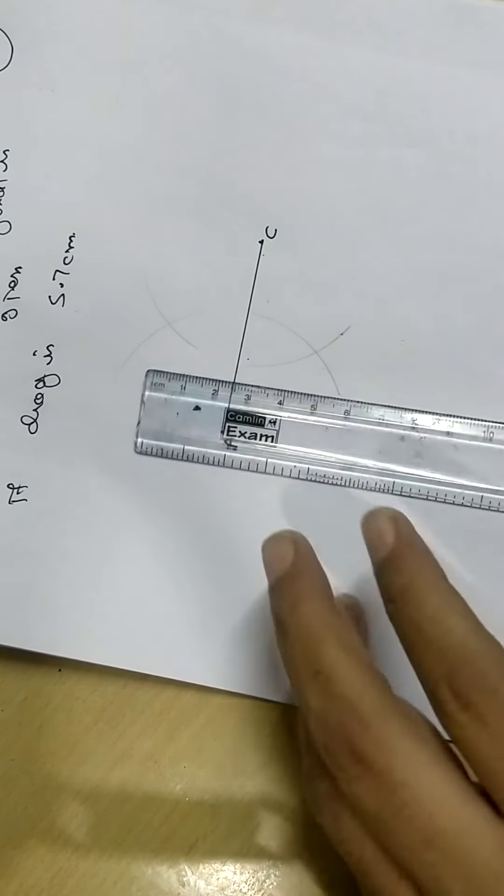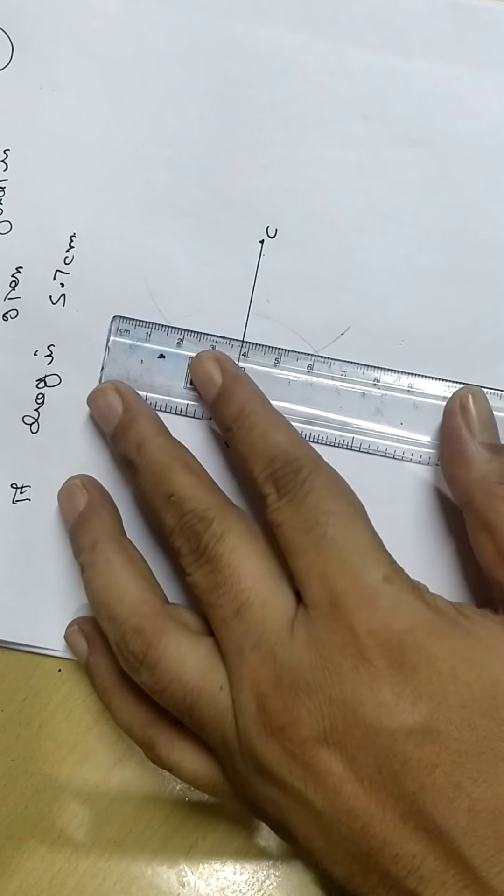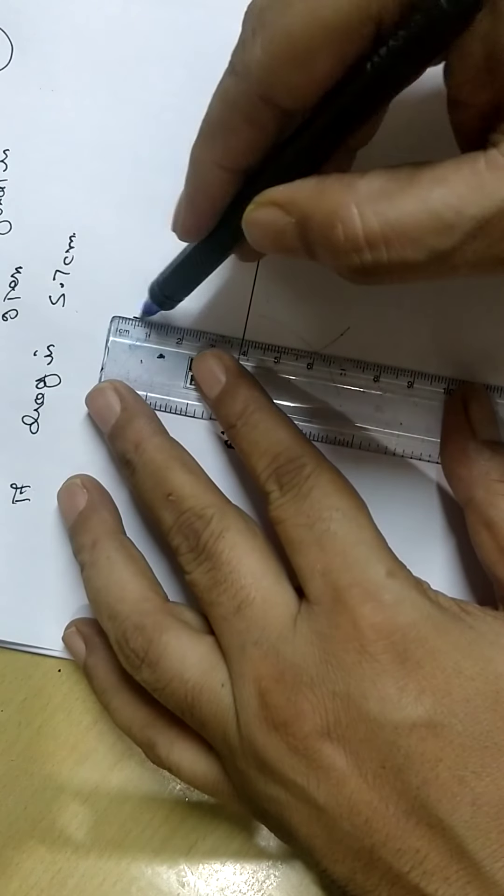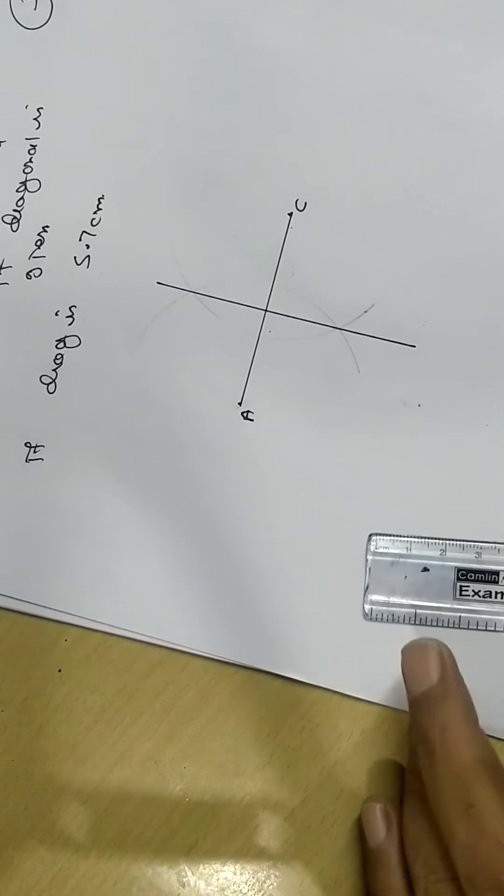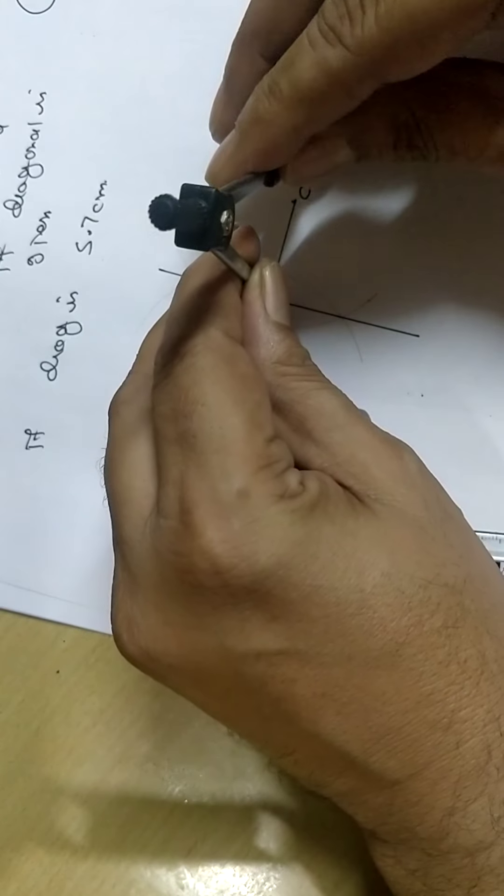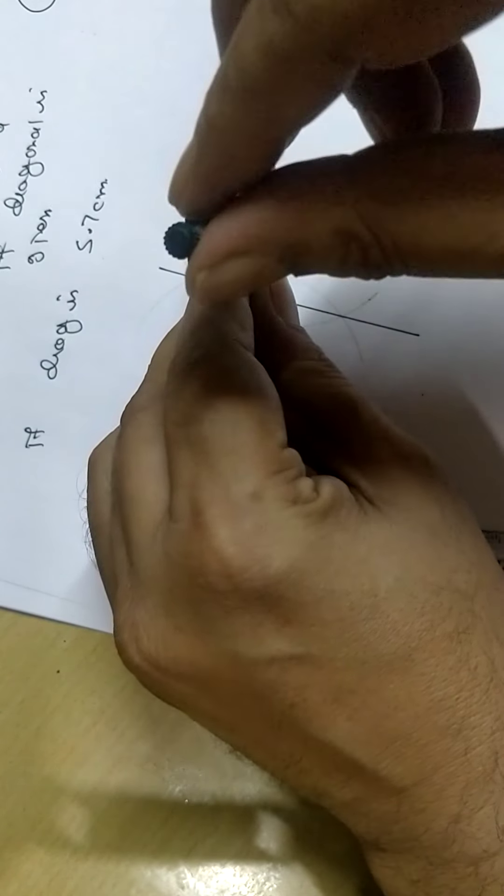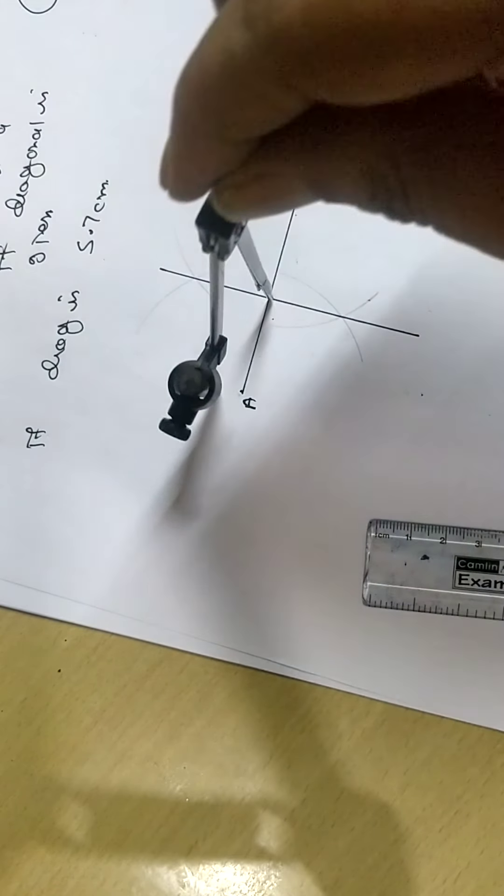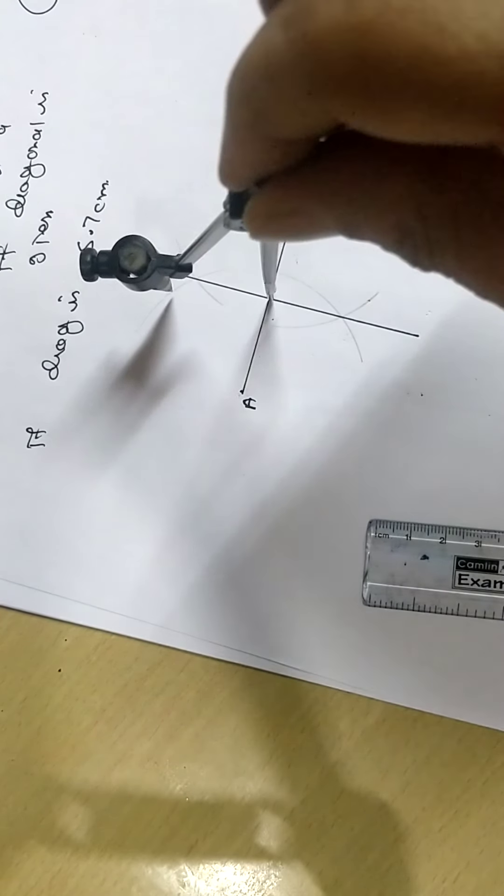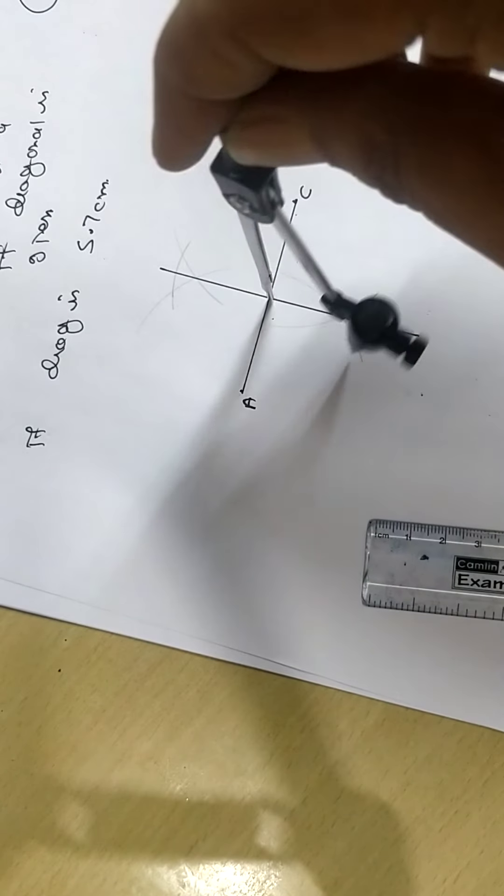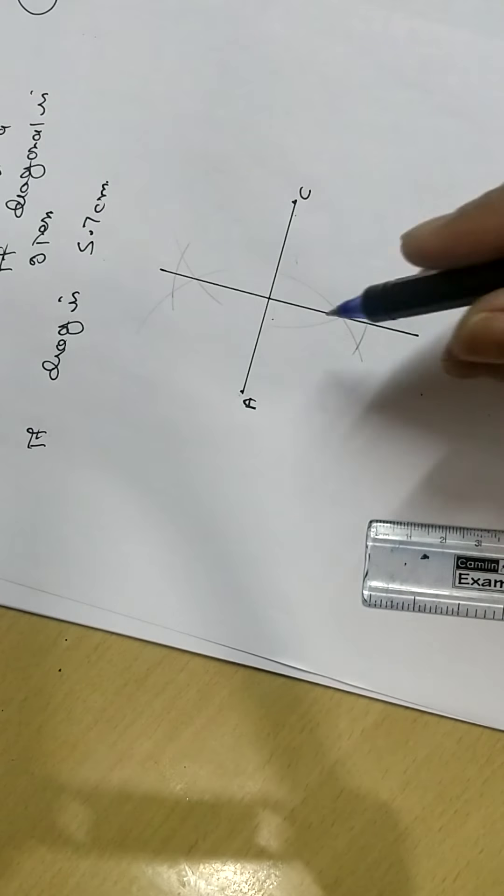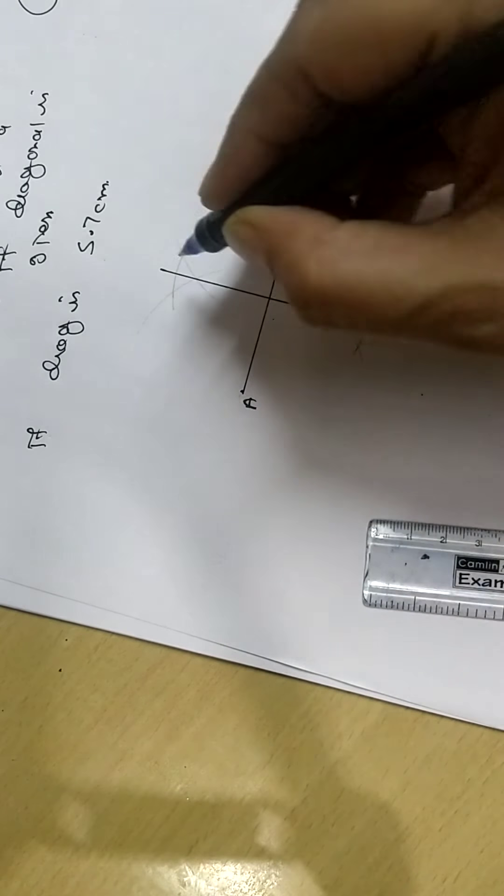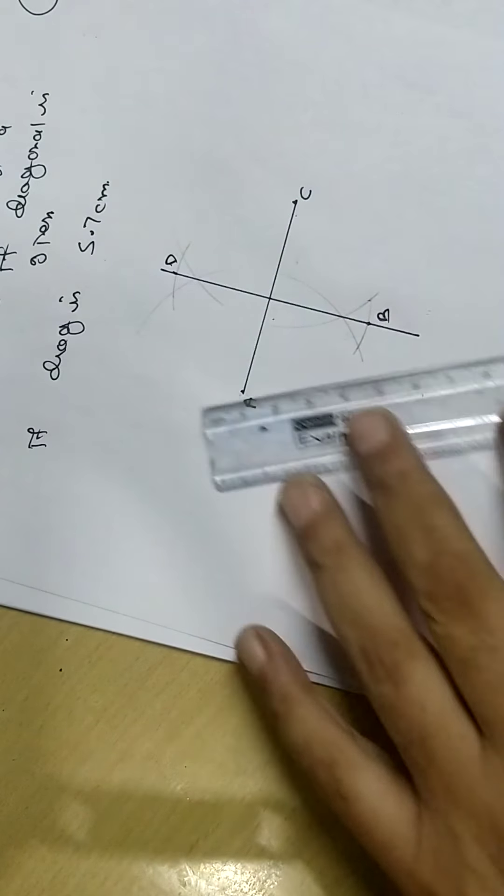Join this. Diagonals bisect each other, bisect means this part same as this part, same as this part, and same as this part, because both the diagonals are equal. This is B, this is D. Now join it.